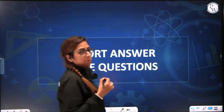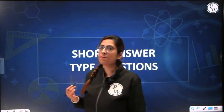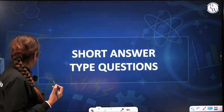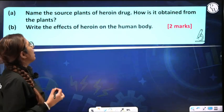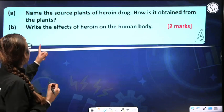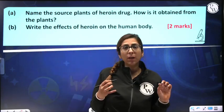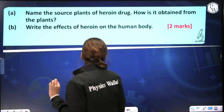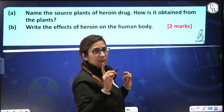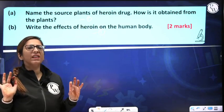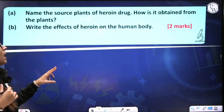Now let's move on to the short answer type questions from the zoology part of 2018 paper. The question: name the source plant of heroin drug — how is it obtained from the plant? Second: write the effects of heroin on the human body. This is a two-mark question, so both parts have one mark each — one line is enough for each.